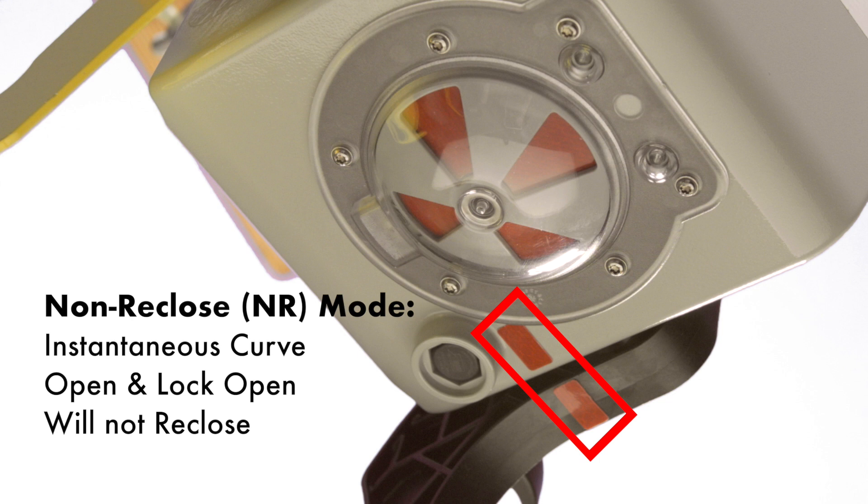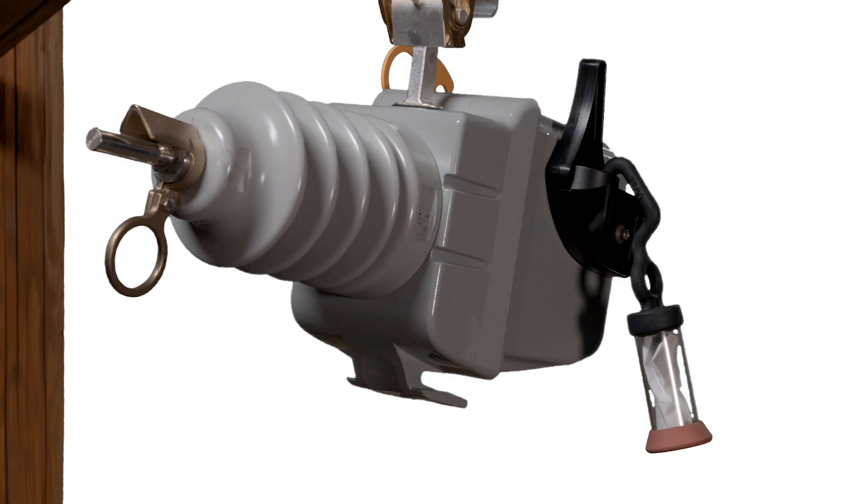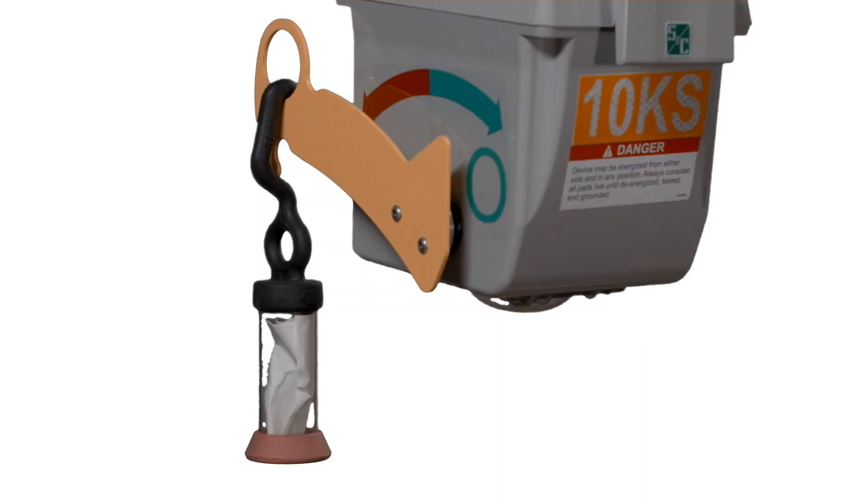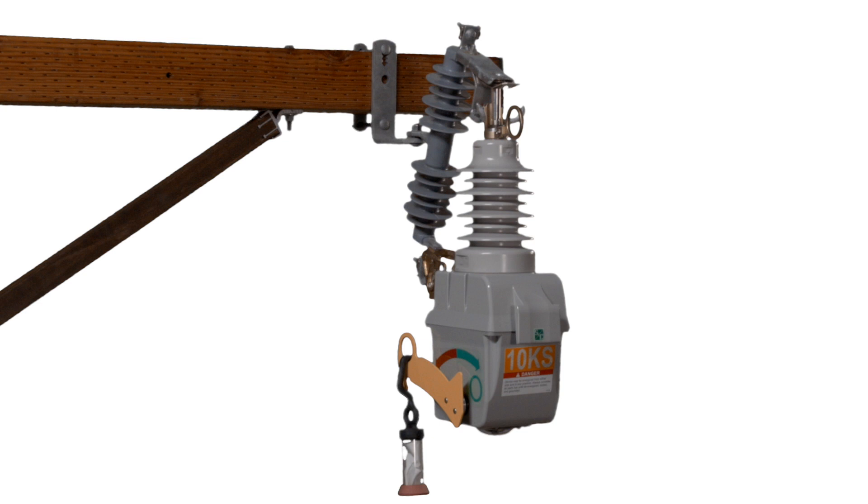The tag clip on the mode selector lever is a convenient place to tag out the VacuFuse self-resetting interrupter. A tag can also be applied to the open-close lever when system practices require it.